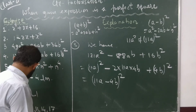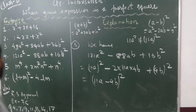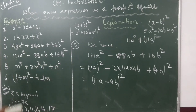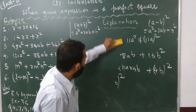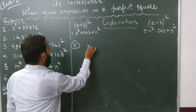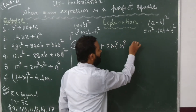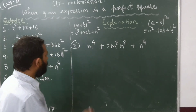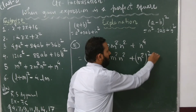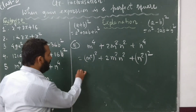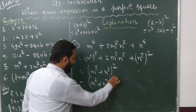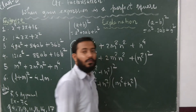Next, problem 5: n⁴ + 2n²·n² + n⁴. There is a plus in the middle, so we use the (a+b)² formula. We can write this as (n²)² + 2·n²·n² + (n²)², which matches a² + 2ab + b² with a = n² and b = n². This gives the answer (n² + n²)², or equivalently written as (n²+n²)(n²+n²). Both forms are correct.